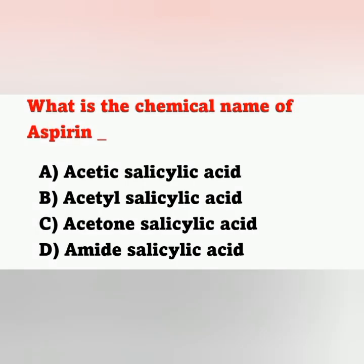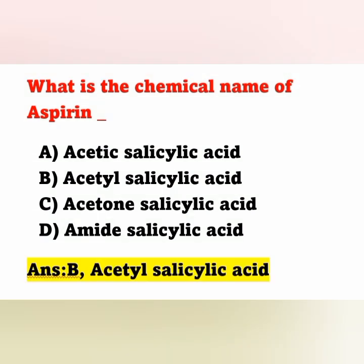Next question: what is the chemical name of aspirin? Option A: acetic salicylic acid. Option B: acetyl salicylic acid. Option C: acetone salicylic acid. Option D: amide salicylic acid. The chemical name of aspirin is acetyl salicylic acid. Option B is the correct answer.